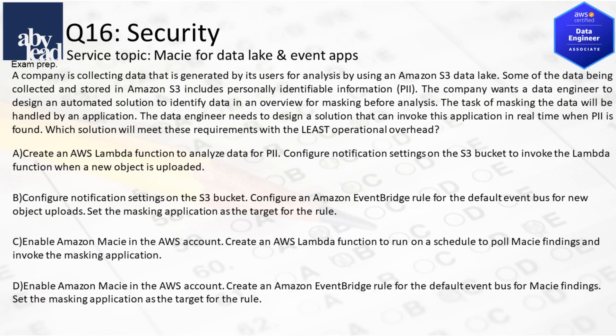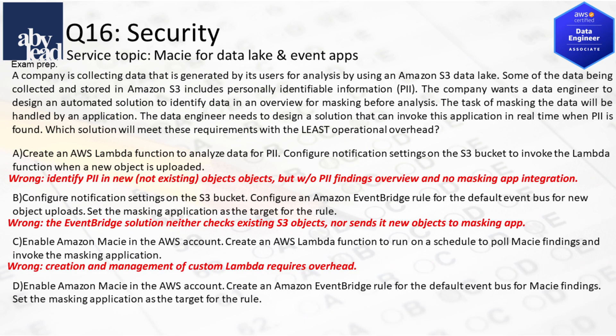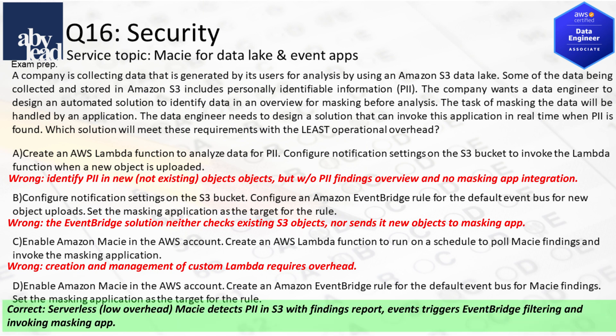Question 16: How do you with least overhead identify private data in a data lake and invoke a real-time masking app with overview? A custom Lambda function requires overhead and without a masking app it's inappropriate. The EventBridge-only solution leaves out most requirements. Most advisable is to apply serverless Macie to detect private data in S3 with filtering in EventBridge and an invoked masking app.